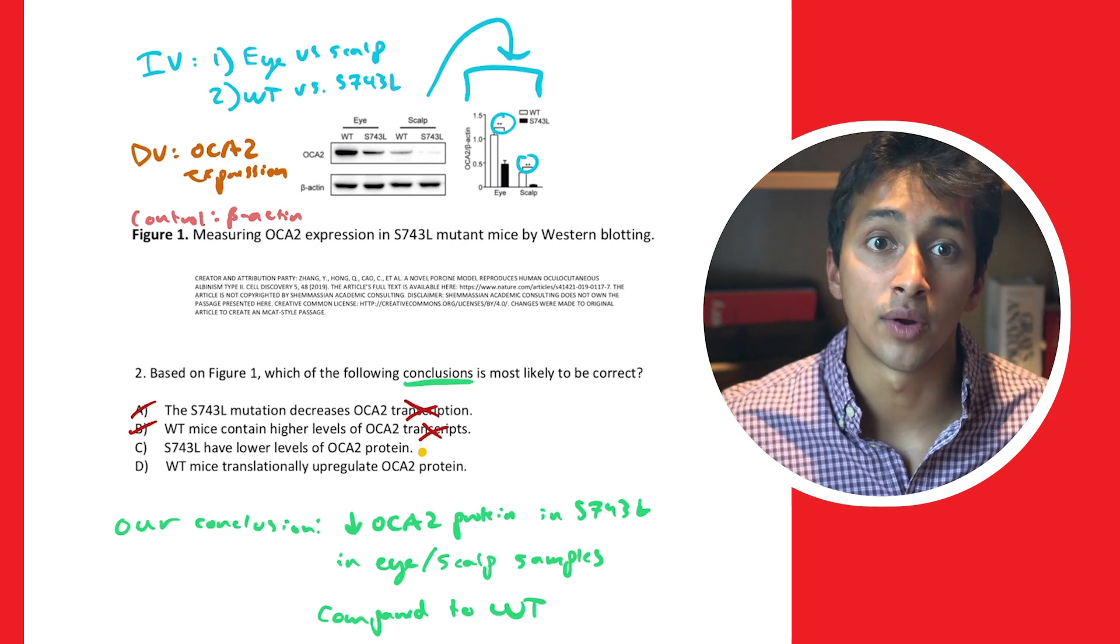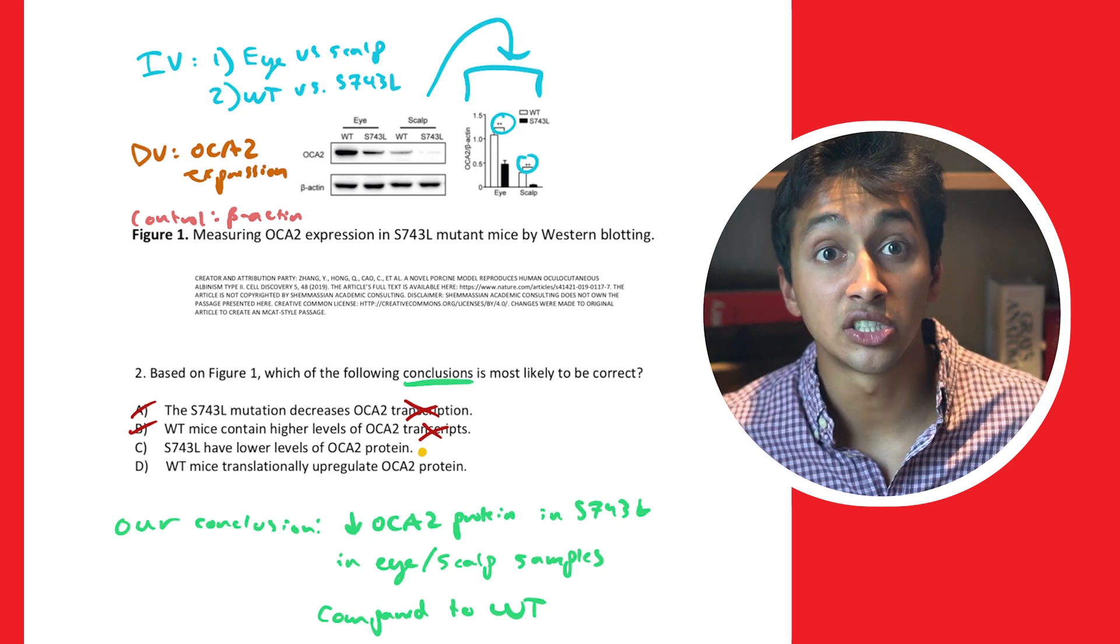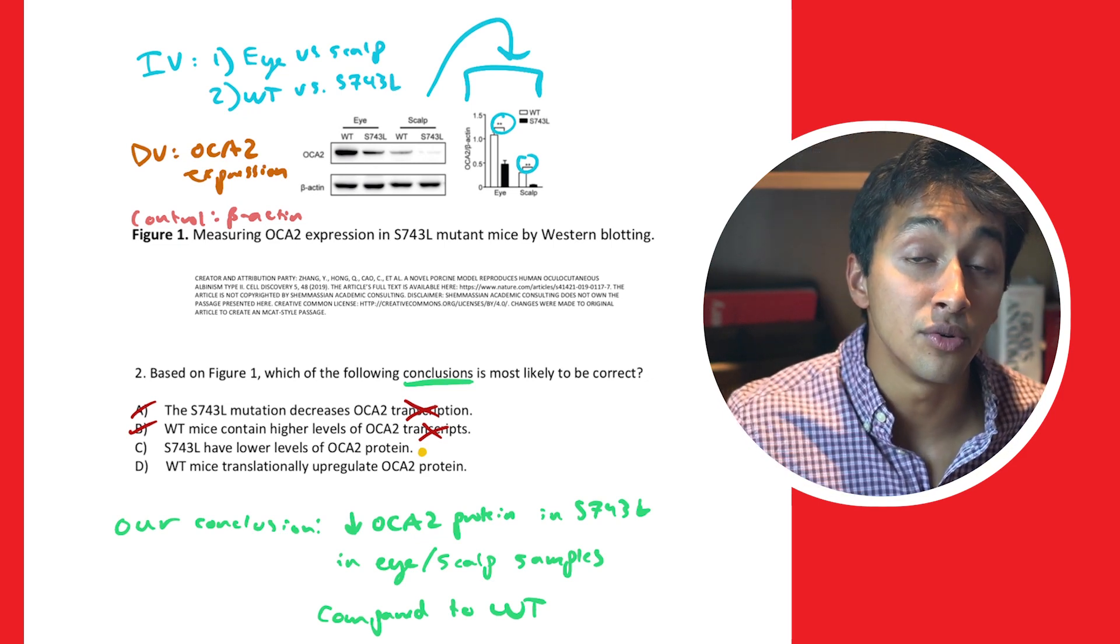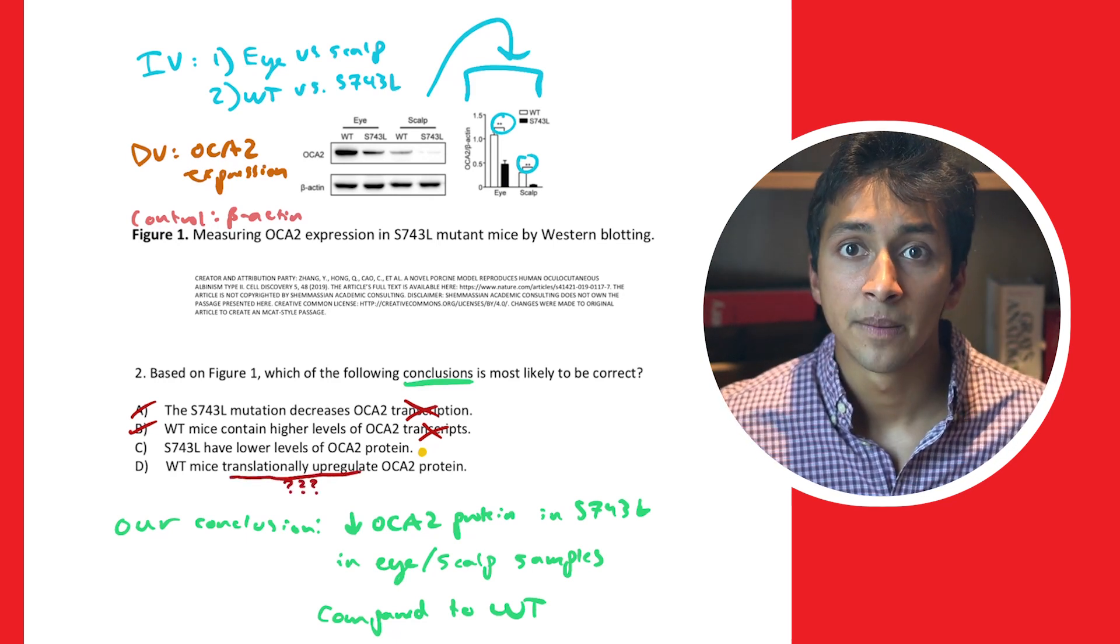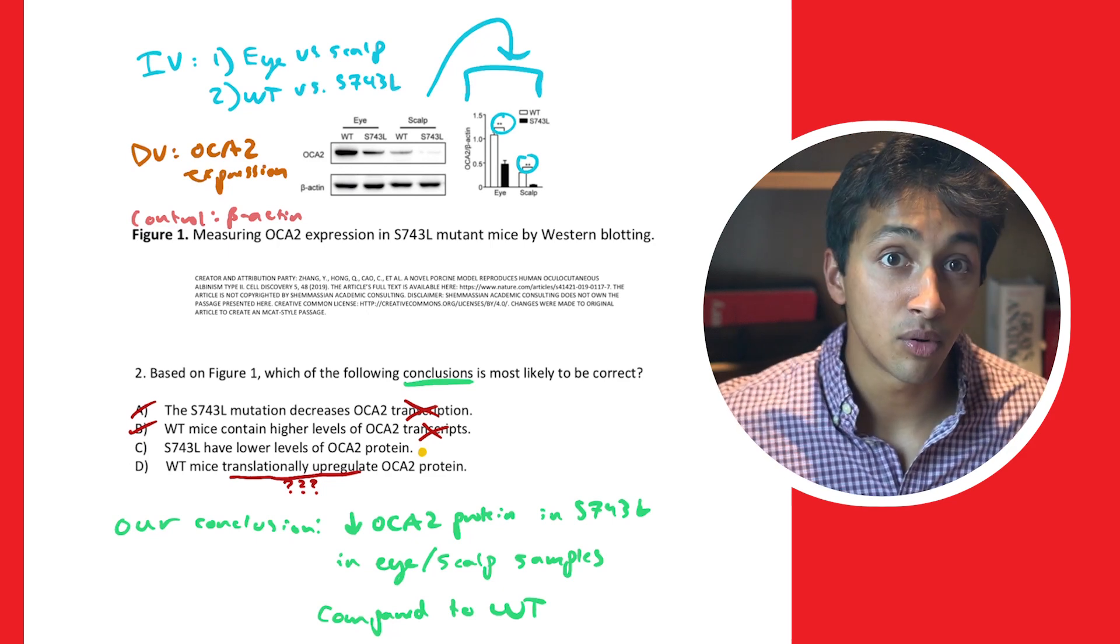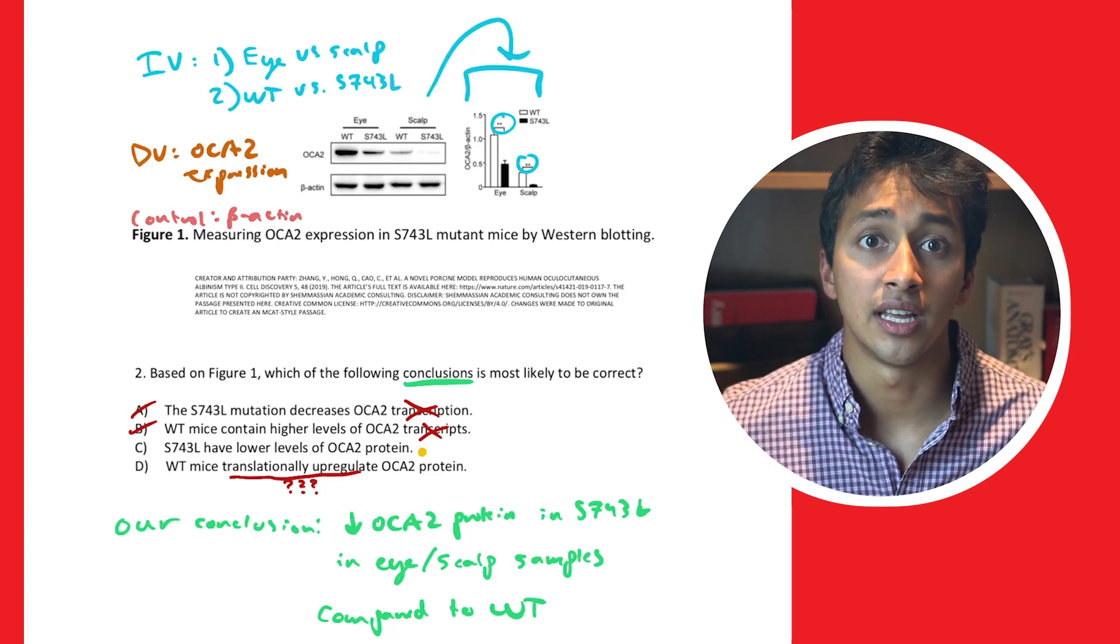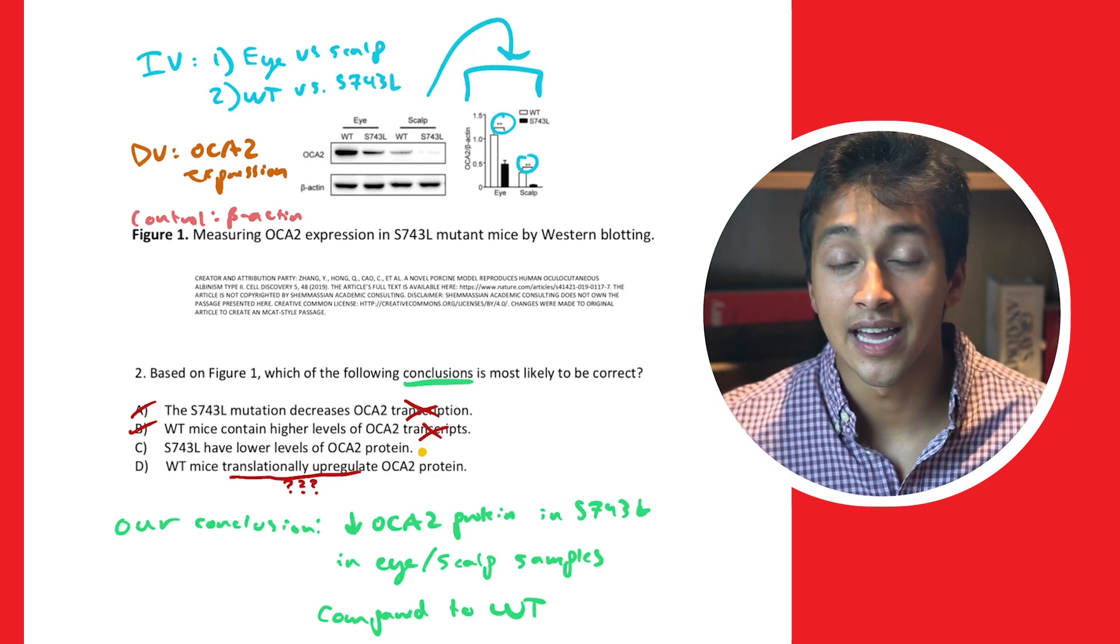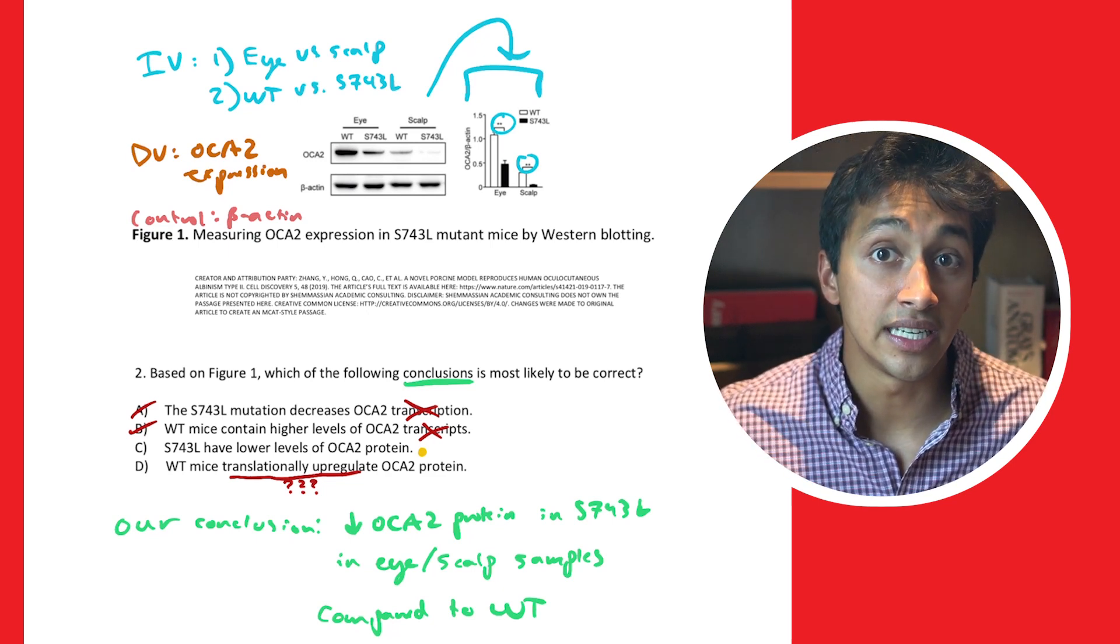So this answer choice is a good candidate for the correct answer option, but let's look at our final answer choice. Choice D reads, wild type mice translationally upregulate ACA2 protein. While it's true that wild type mice had higher ACA2 levels compared to the S743L mutant condition, we can't conclusively say that this is due to the process of translational upregulation. Wild type mice could have had higher ACA2 levels for many other reasons that aren't strictly translational upregulation. For example, what if wild type mice transcriptionally upregulate ACA2 mRNA so that we see more protein expression in those samples? If you can think of a counter example to any answer choice on any section of the MCAT, there's a pretty good chance that that answer is incorrect. After looking through all four of our answer choice options, we can say that answer choice C is our correct answer here.